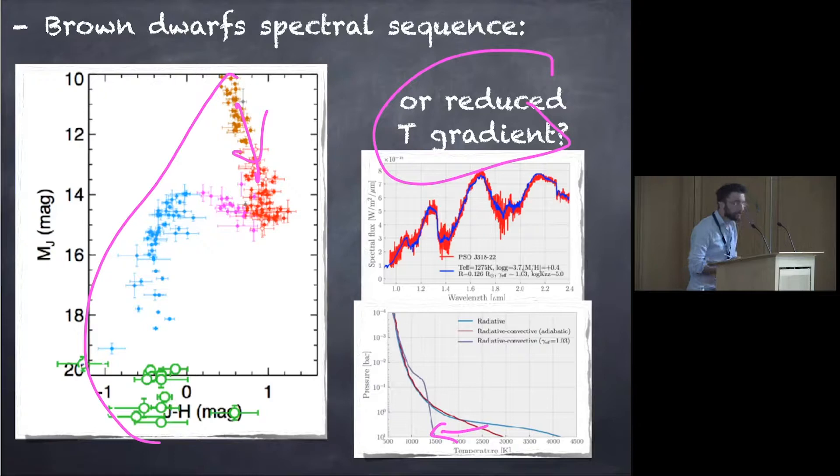So at the same time, you have your transition between the L and T dwarf, here, you have a transition between CO and CH4. So it's really completely correlated to chemistry. So what if the chemistry, the transition between CO and CH4, is able to impact the convective behavior in the atmosphere, and produce at the same time the reddening?